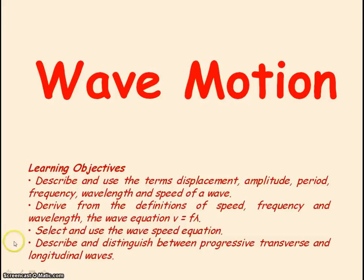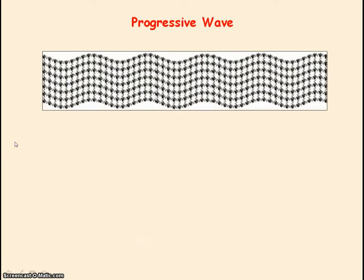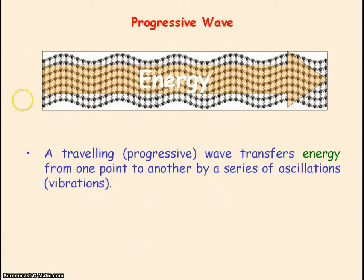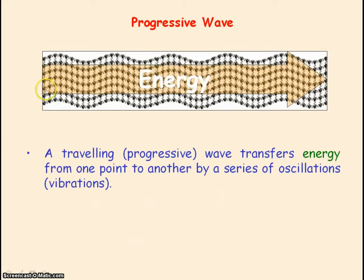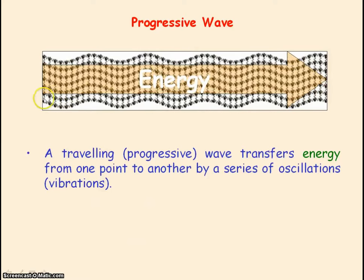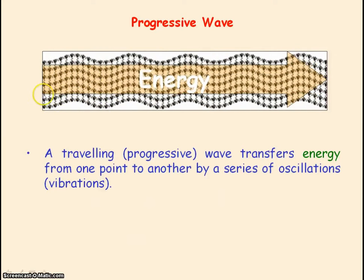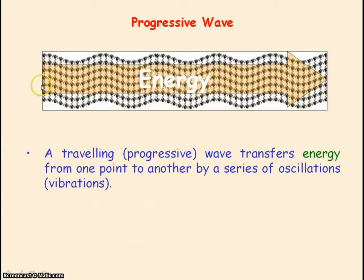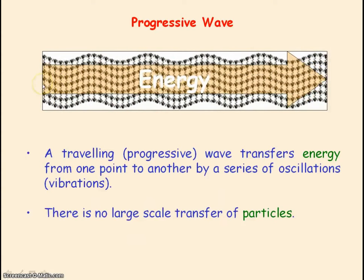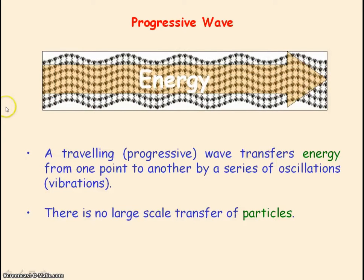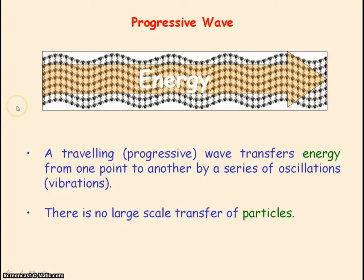We're going to be looking at wave motion. A progressive wave is also known as a travelling wave and it transfers energy from one point to another through a series of oscillations or vibrations — a movement about a fixed point. However, a progressive wave does not transfer particles from one point to another, so there's no large scale transfer of matter.